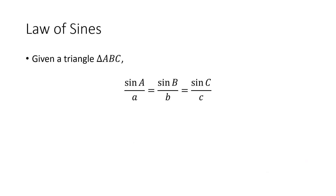The law of sines says that the ratio of the sine of an angle to the length of the opposite side is the same no matter which angle you choose. So sine of A divided by little a equals sine of B divided by little b, which equals sine of C divided by little c. This is really three identities in one, and depending on what we want to find, we'll use whichever pair of equal ratios gives us the information we need.